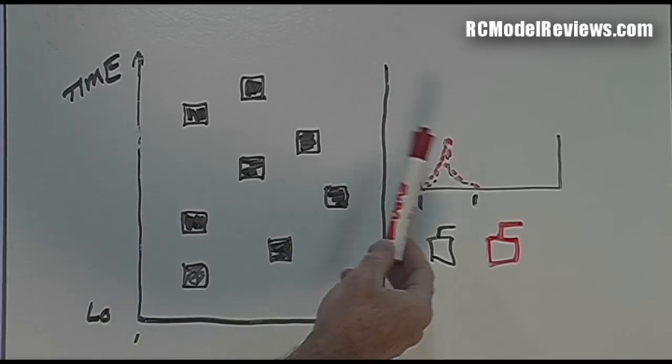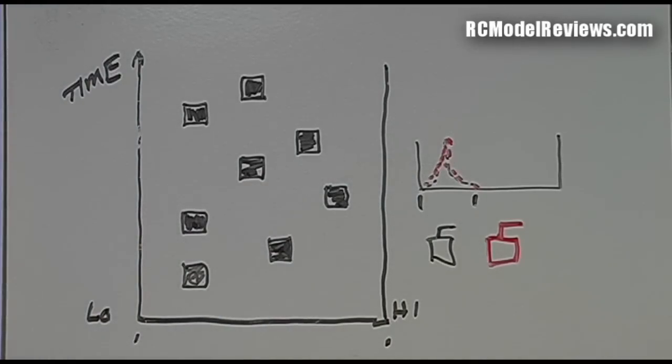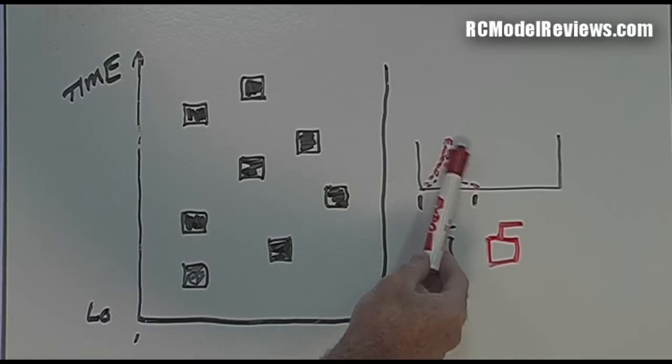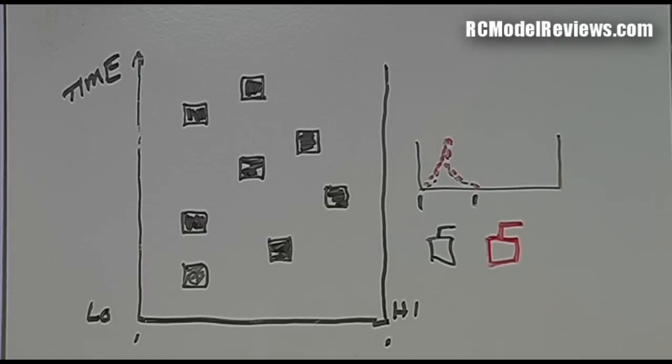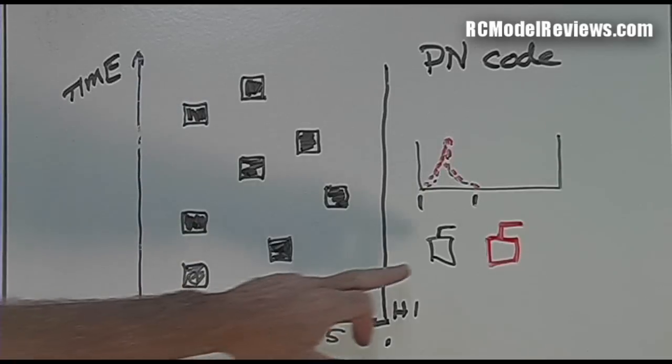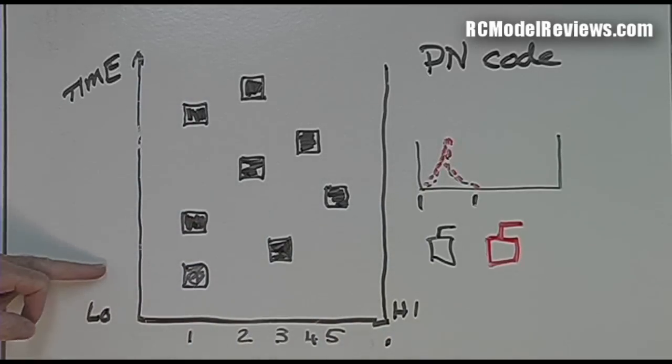And they're both in this example using the same little piece of the band, both sitting on top of the same piece of band. Now that may be because they're simply DSS systems, or it may be they are constantly agile systems that have just chosen by random to use exactly the same part of the band at the same time for a very brief instance.